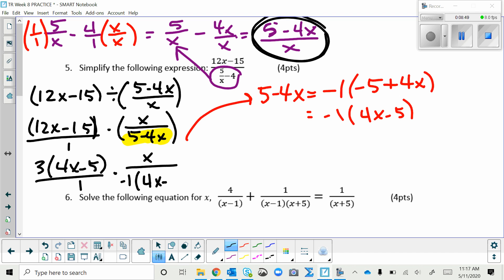Why do I want to go through all that trouble? Well, it's so that I can do this now. 4X minus 5 on the bottom. 4X minus 5 on the top. They cancel out now because they're exactly the same. And so now I multiply across the top, 3X. And across the bottom, 1 times negative 1, which simplifies to negative 3X.